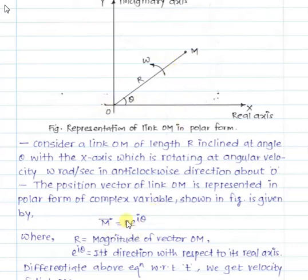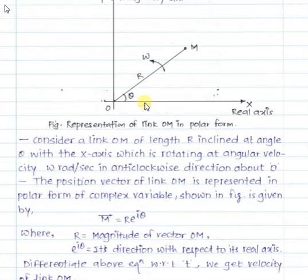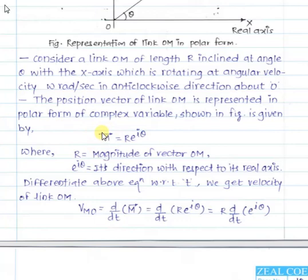If you want to write the polar form in complex variable, the position vector M = R·e^(iθ). Here, R is the magnitude of vector OM and theta is the direction with respect to the real axis. So the position vector of link OM is R·e^(iθ), where I is the imaginary number. To find velocity and acceleration, you differentiate this position vector with respect to time.